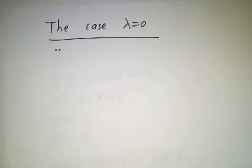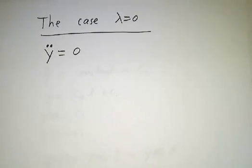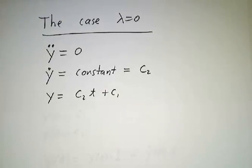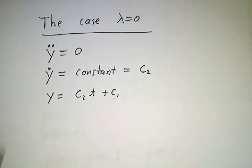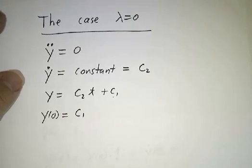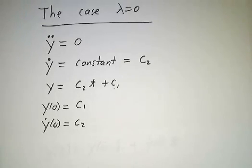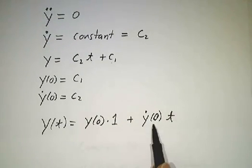Last thing is we've talked so far about lambda negative. What if lambda is zero? If lambda is zero, then our equation is just that the second derivative of y is zero. Integrate that once, and you get that the first derivative is a constant, which I'm calling c2. Integrate that again, and you get that the function is c2 times t plus another constant, which I'm calling c1. So the initial value is c1, just plug in t equals zero, and the initial derivative is c2.